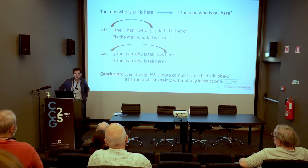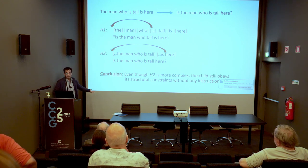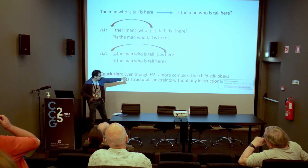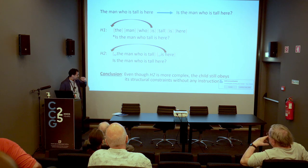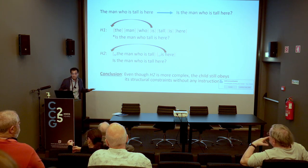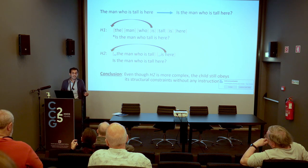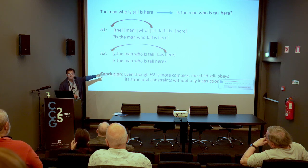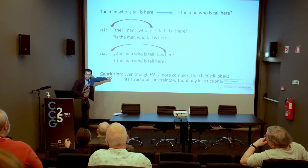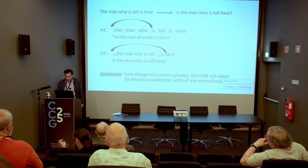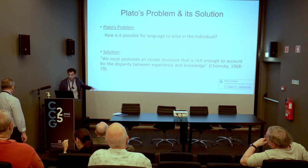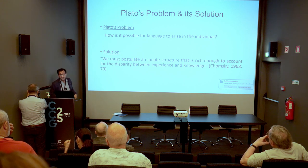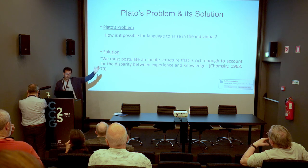Which hypothesis is the more complex one? Hypothesis two, because it additionally specifies the noun phrase. The conclusion Chomsky reaches is that even though hypothesis two is more complex, the child still obeys its structural constraints without any instruction. When we look at the primary linguistic data, we don't find the child making mistakes like the wrong form. So where did this knowledge of this processing come from? That's the original argument.